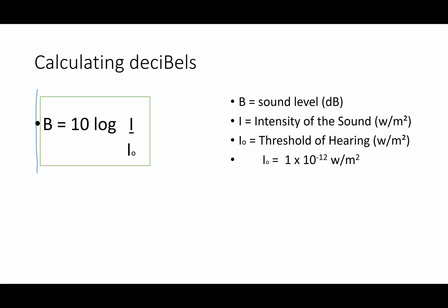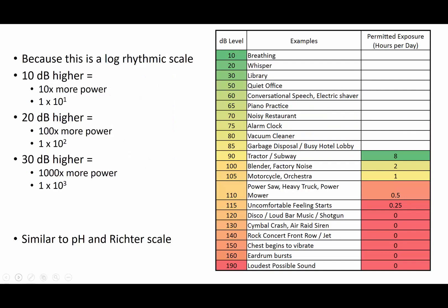This is the equation you and I are going to use to calculate decibels. Capital B is for sound level in decibels. 10 times the base 10 log of the intensity of a sound in watts per meter squared, divided by the threshold of hearing, 1 times 10 to the negative 12 watts per meters squared. So in the next video, we're going to use this and do some calculations. But let's take a few minutes and talk about different decibel ratings for different things.